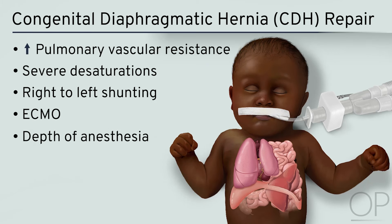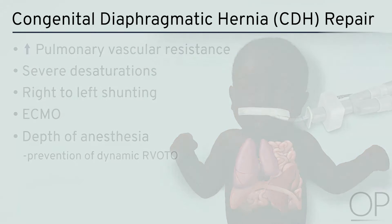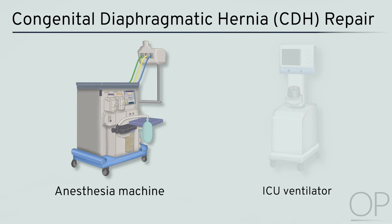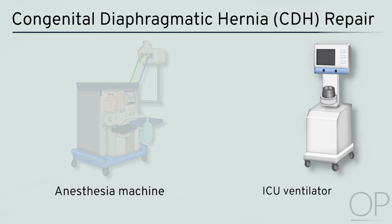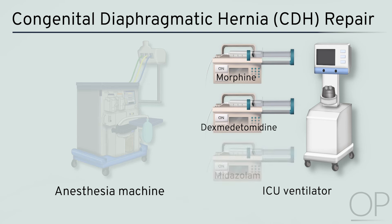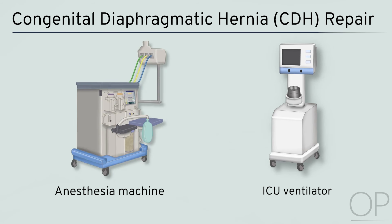Adequate depth of anesthesia and prevention of dynamic right ventricular outflow tract obstruction are important aspects. The type of anesthesia is dependent on the ventilator. A balanced anesthesia technique with volatile agents and narcotics can be used with an anesthesia machine, whereas a mixture of intravenous anesthetics — such as morphine, dexmedetomidine, and midazolam infusions — is used with ICU ventilators. Aggressive ventilation and recruitment maneuvers must be avoided. Careful selection of appropriate ventilator settings and adjustments is important.